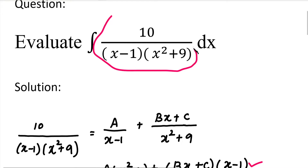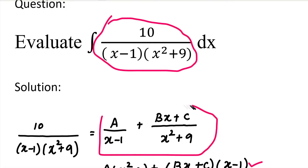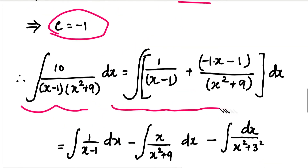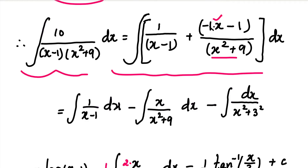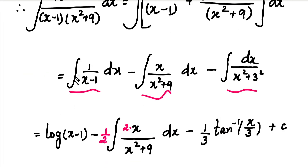Now we substitute the values A, B, and C. So 10 divided by (x minus 1)(x squared plus 9) equals A divided by (x minus 1), plus (Bx plus C) divided by (x squared plus 9). Substituting gives: 1 divided by (x minus 1), minus x divided by (x squared plus 9), minus 1 divided by (x squared plus 9). We now set up three separate integrals.